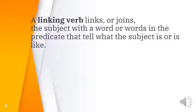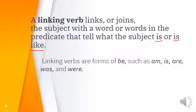A linking verb links or joins the subject with a word or words in the predicate that tell what the subject is or is like. It describes the subject. The word that describes a noun is called an adjective, so you will often find adjectives after linking verbs.